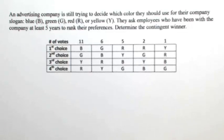An advertising company is trying to decide which color they should use for their company's slogan: blue, green, red, or yellow. They ask employees who have been with the company at least five years to rank their preferences. Determine the contingent winner.